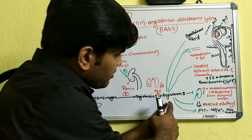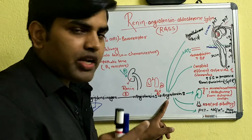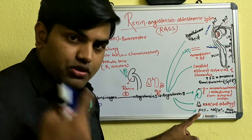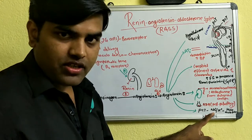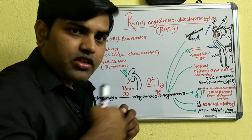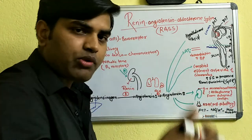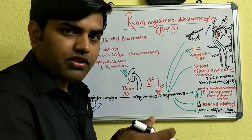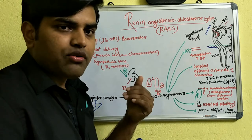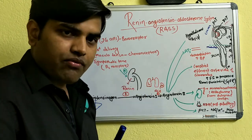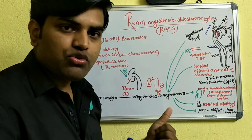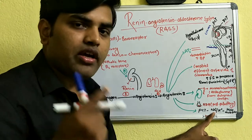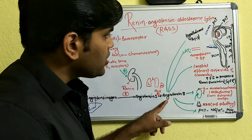Another function of angiotensin-2 is to regulate blood pressure by promoting sodium reabsorption in the kidney. In the proximal convoluted tubule, there is a sodium-hydrogen exchanger whose main function is to absorb sodium and secrete hydrogen. That hydrogen combines with bicarbonate to form carbonic acid, which dissociates into carbon dioxide and water via carbonic anhydrase. The CO2 diffuses back into the cell, reforms carbonic acid, and dissociates into hydrogen and bicarbonate, which is then reabsorbed. This process facilitates both bicarbonate and sodium reabsorption.